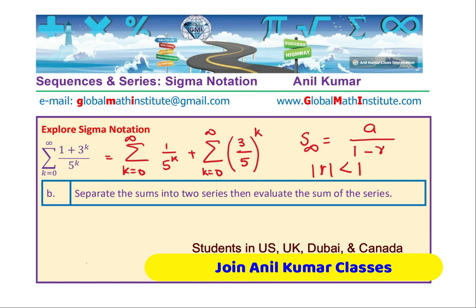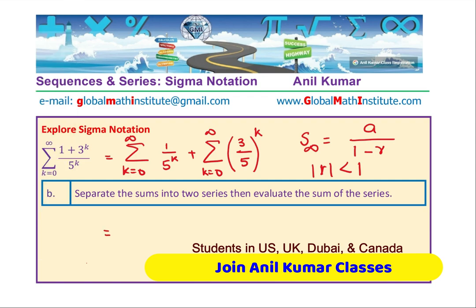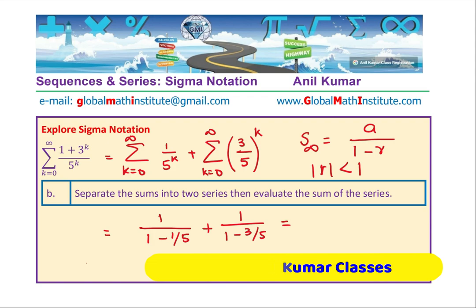So from here, it is very clear that we have two different series, first term A being 1 in both, and the multiplication factor is 1 over 5. And therefore, we can write down the sum of the series as equal to 1 over 1 minus 1 over 5 plus 1 over 1 minus 3 over 5. So that gives you what? That gives you 1 over 5 minus 1 over 5 plus 1 over 5 minus 3 over 5.